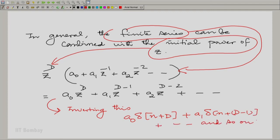And inverting this is very easy. We simply get A0 delta N plus D and so on. So, you get a train of impulses, discrete impulses, a finite length sequence. And if we invoke the linearity of the Z-transform, then one can easily see that you can treat that finite series separately, dispense with it, get that finite length sequence, and now deal with the remainder divided by the denominator separately.